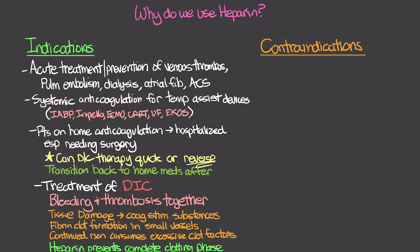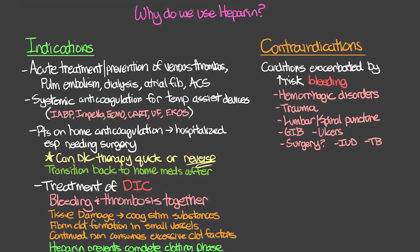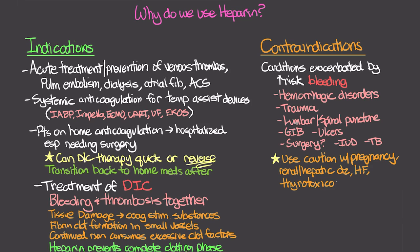There are contraindications in which we would not use heparin, including conditions that would be exacerbated by increased bleeding risk: hemorrhagic disorders, recent trauma, lumbar or spinal punctures, GI ulcers, recent surgery, IUD placement, tuberculosis, and in some cases indwelling catheters. Use caution in pregnant patients due to potential harm to the baby, and in patients with renal or hepatic disease, since this affects metabolism, excretion, and drug effectiveness. Heart failure, thyrotoxicosis, diarrhea, and fever can also alter normal coagulation.